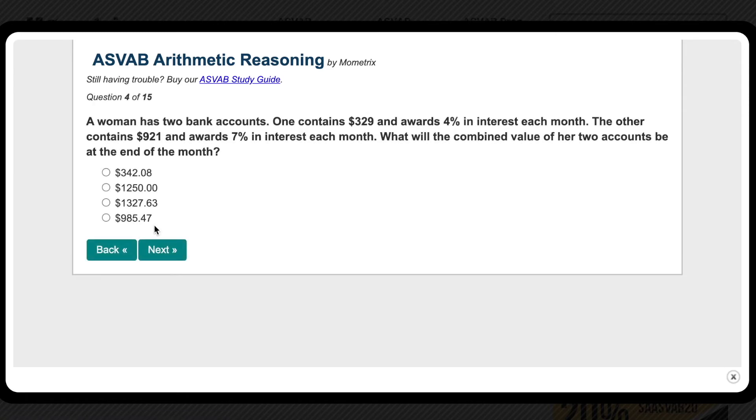The fourth problem we have is about money and interest. And as always, let's read the problem and figure out what we're solving for. A woman has two bank accounts. One contains $329 and awards 4% in interest each month. The other contains $921 and awards 7% in interest each month. What will the combined value of her two accounts be at the end of the month? Okay, this is the important part. You want to figure out what is the combined value of her two accounts at the end of the month. Our next step is to write these sentences into an equation. It's kind of long, but again, let's take it one at a time.